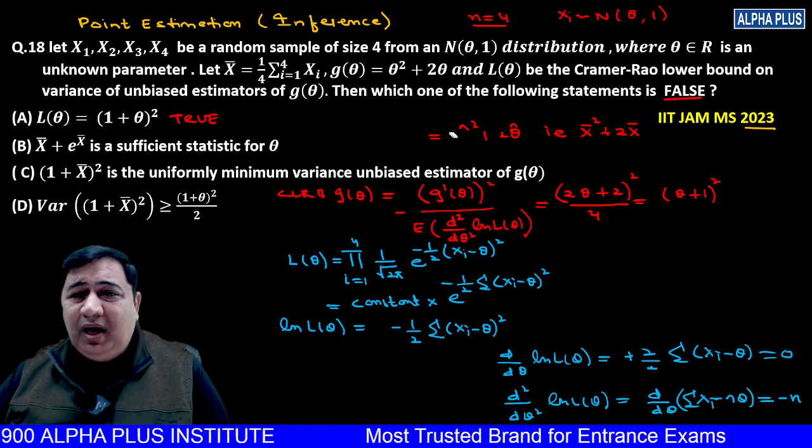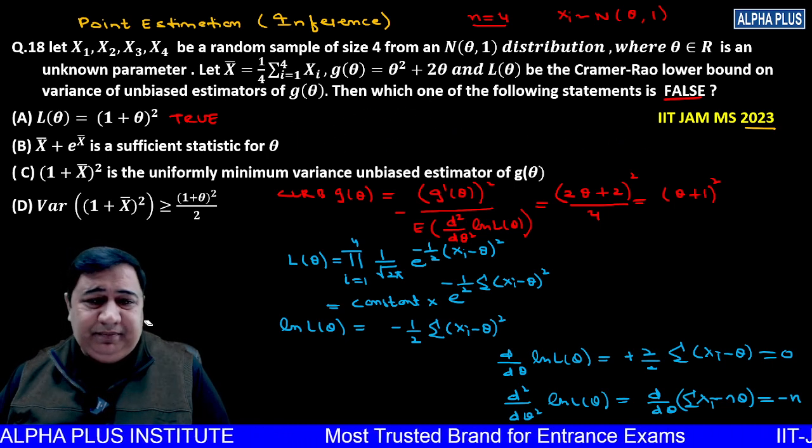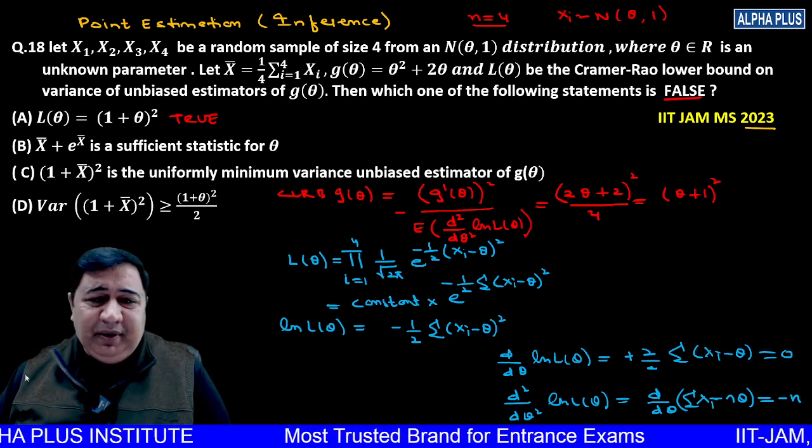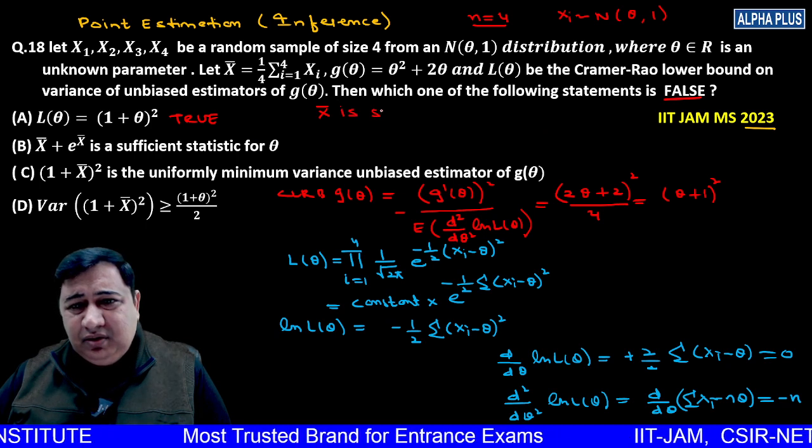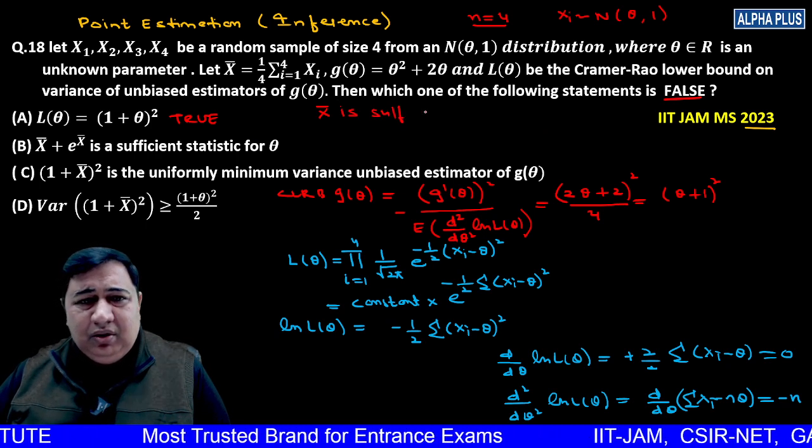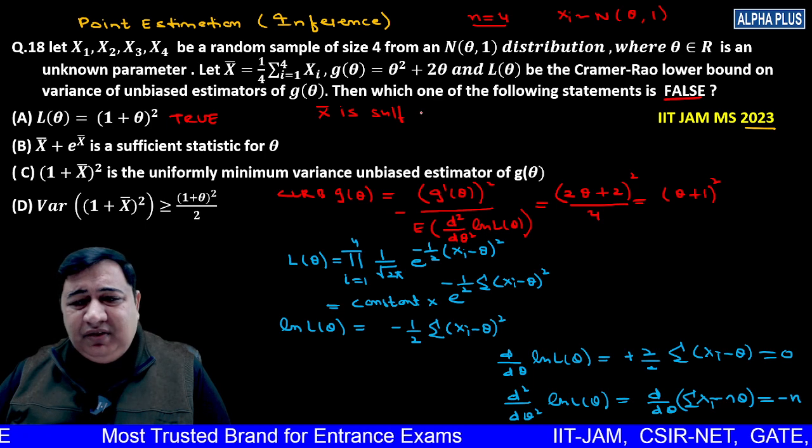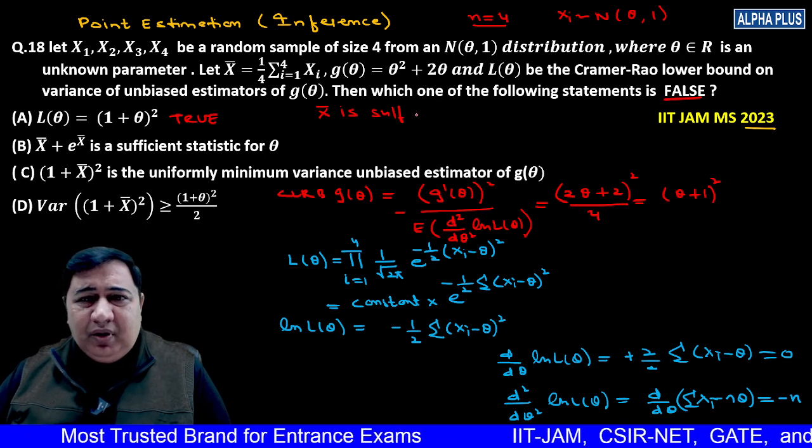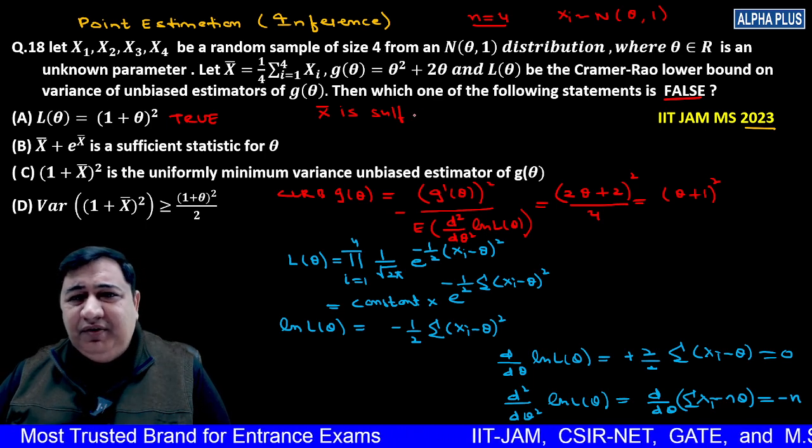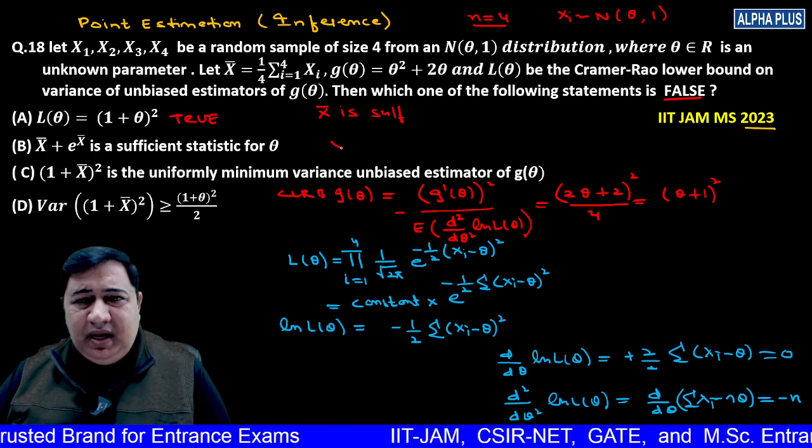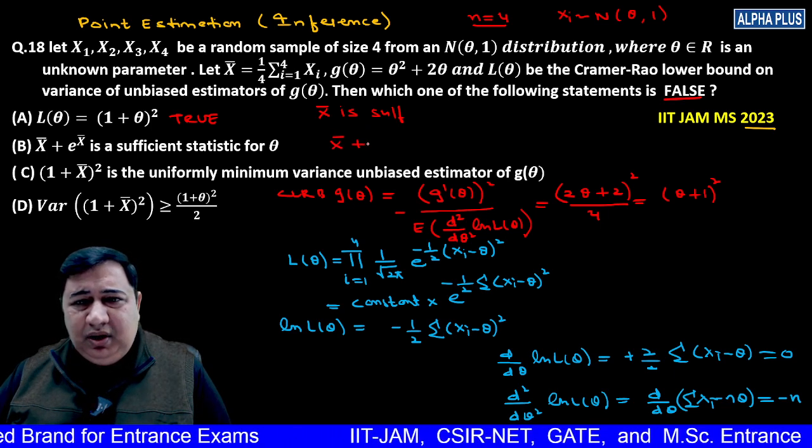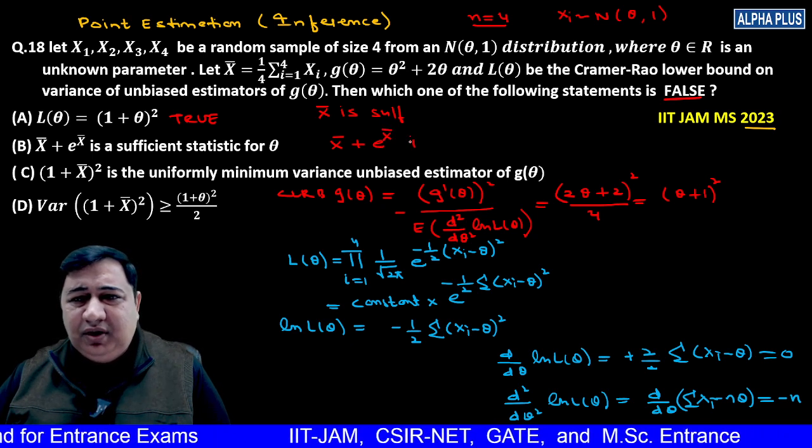X-bar is a sufficient statistic. You can check by factorization theorem. X-bar is sufficient. If X-bar is sufficient statistics, then its function is also sufficient. It means X-bar is sufficient for theta.